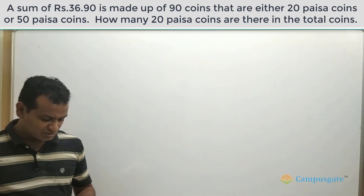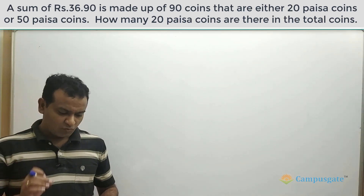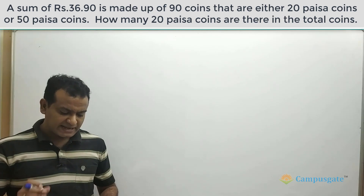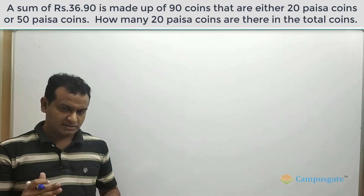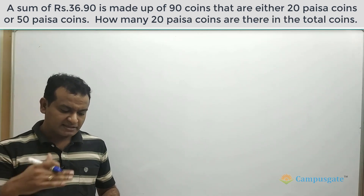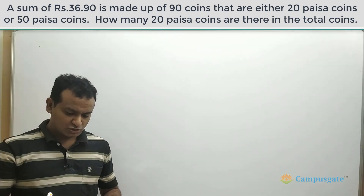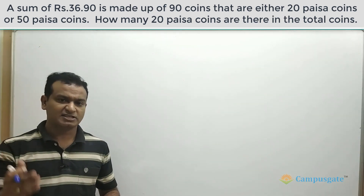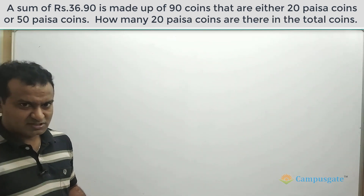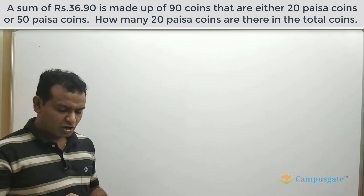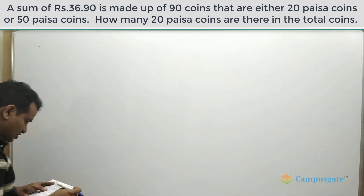In this question, it is given that overall 36 rupees 90 paisa is made of 90 coins, which are either 20 paisa coins or 50 paisa coins. We need to find out how many 20 paisa coins there are. This question can be solved directly by using equations.